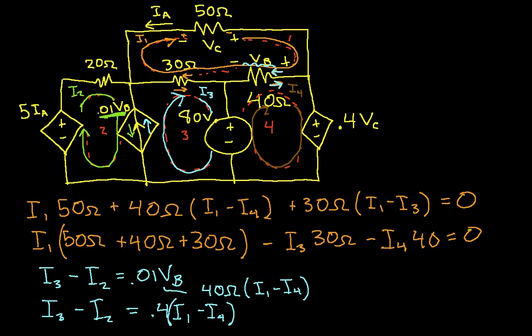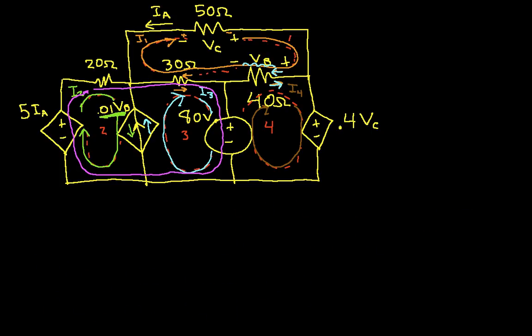The next thing we need to do is a super mesh around the current source. So the super mesh is going to include mesh 2 and 3. And then all we have to do is go around the super mesh applying Kirchhoff's voltage law. And we'll have our second equation from the super mesh. So let's see if we can clear out some space. Okay, so going around the mesh, or I'm sorry, the super mesh, let's start here.